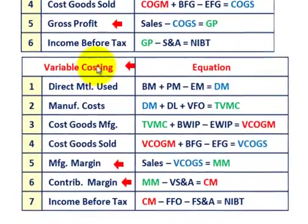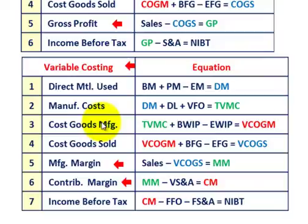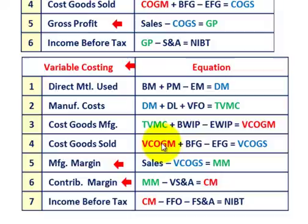For variable costing, direct materials used is calculated the same way. The difference is in manufacturing costs: direct materials used plus direct labor plus variable factory overhead only — giving total variable manufacturing costs. Variable cost of goods manufactured equals total variable manufacturing costs plus beginning WIP minus ending WIP. Variable cost of goods sold equals variable cost of goods manufactured plus beginning finished goods minus ending finished goods.